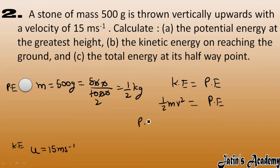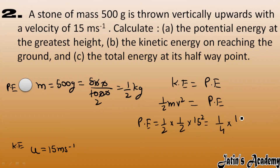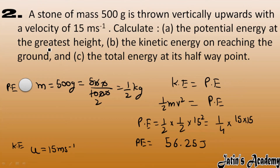So potential energy equals half times mass (1/2 kg) times velocity (15)² — this becomes 1/4 times 15 times 15. When you solve it, the potential energy value comes out to 56.25 joules. So the potential energy at the greatest height is 56.25 joules.